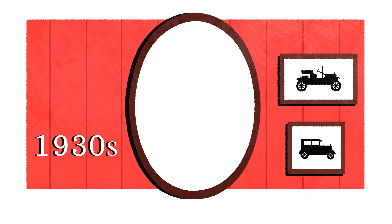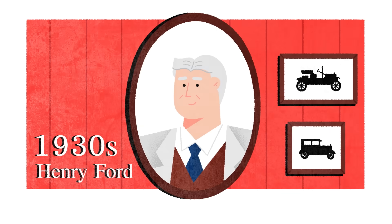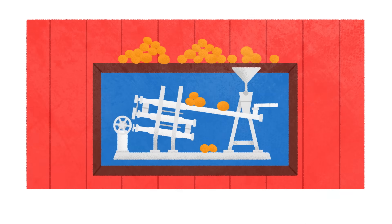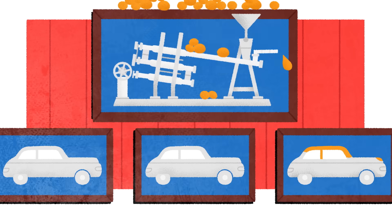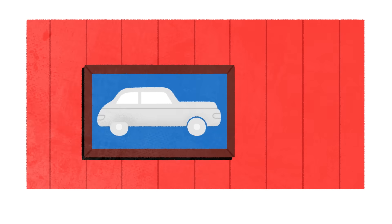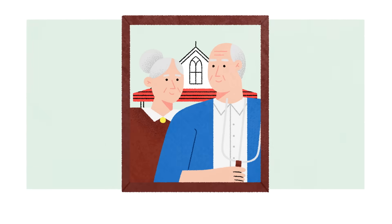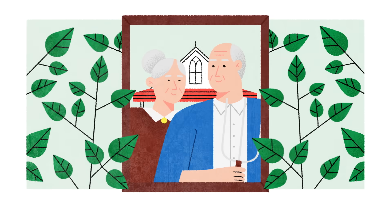In the 1930s, American industrialist Henry Ford had one overwhelming obsession — soybeans. He extracted their oil to make enamel for painting his cars. He crushed them into powder to make plastic parts. And he encouraged American farmers to grow as much of the plant as possible.